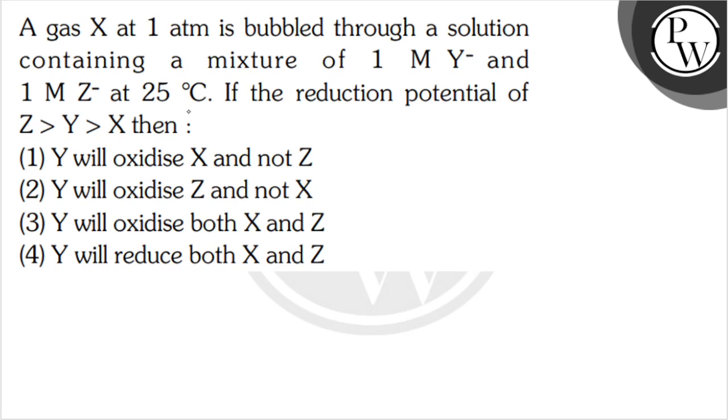If the reduction potential of Z greater than Y greater than X, then our options are: Y will oxidize X and not Z, Y will oxidize Z and not X, third option is Y will oxidize both X and Z, and fourth option is Y will reduce both X and Z.